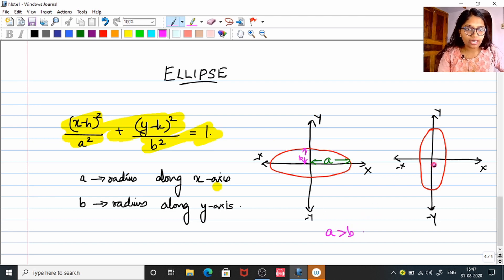But in this case, this is your a because this is the radius along x-axis, and this is going to be your b. So since a is less than b, our ellipse is flattened along y-axis.